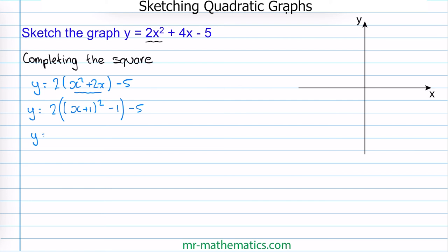So our next step is to expand the bracket. We have 2 lots of x plus 1 squared, and then 2 times negative 1 is negative 2, then take away 5. And this we can simplify to minus 7.